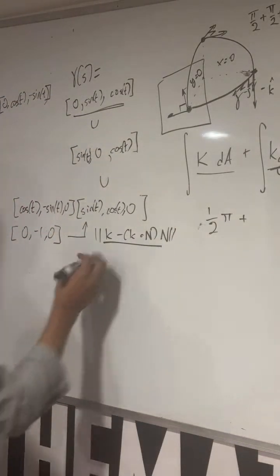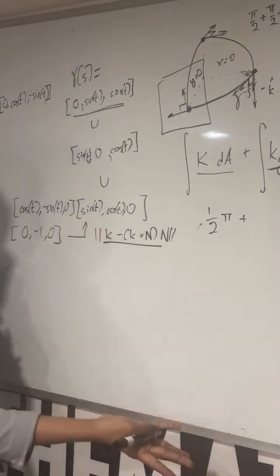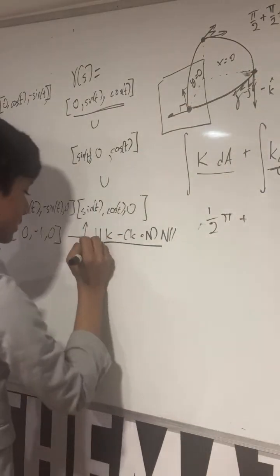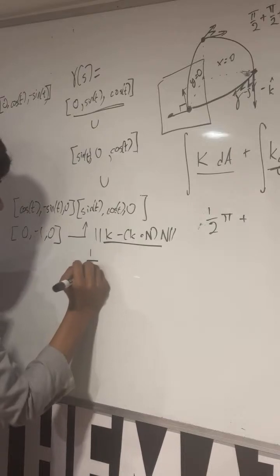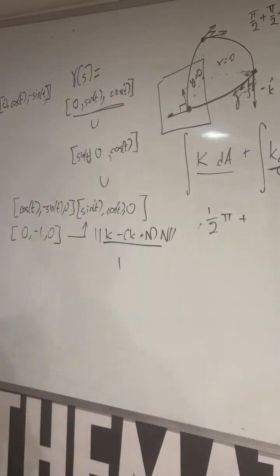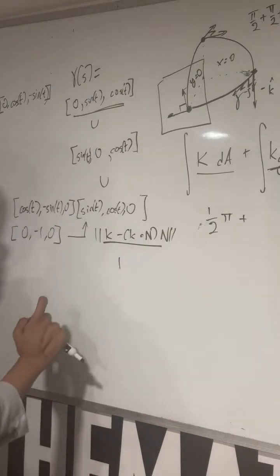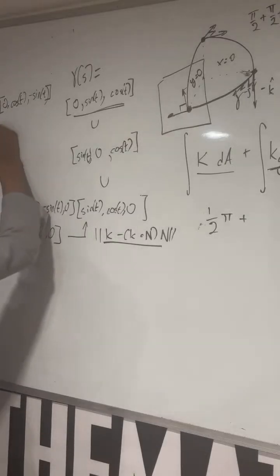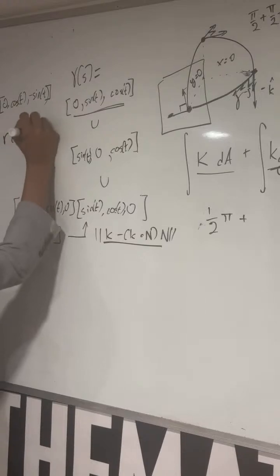So you get half pi plus 3 pi over 2. The only thing left is the geodesic curvature, and to calculate that, you just need to know the curvature. And the curvature of something like these quarter circles is always the same. It's just 1 over r, but in this case, r is always 1. So, well, actually, that's just the norm of the curvature, not the actual curvature vectors. So remember the formula for curvature.